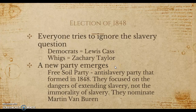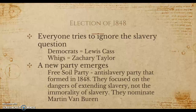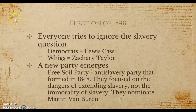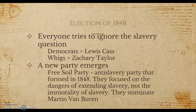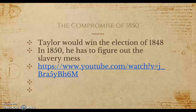During this time there was the election of 1848, and everyone tried to ignore the slavery question. The Democrats nominated Louis Cass, the Whigs nominated Zachary Taylor. But a new party emerged: the Free Soil Party — a key term. Formed in 1848, it was the anti-slavery party. They focused on the dangers of extending slavery, not the immorality of slavery. They weren't arguing slavery should be abolished — they just didn't want new states entered as slave states. They were fine with slavery where it was; they just didn't want it extended. They nominated Martin Van Buren.